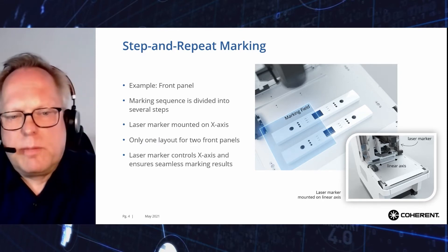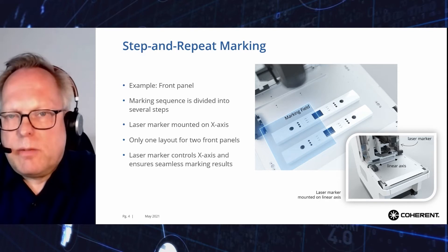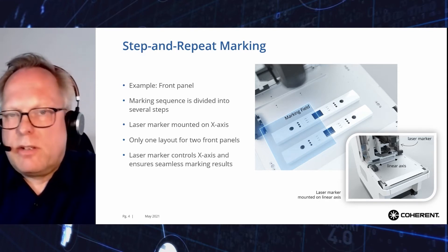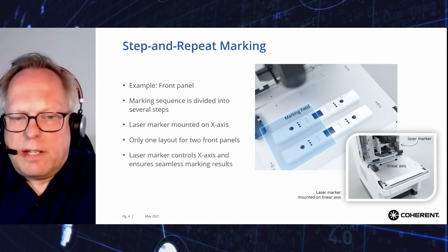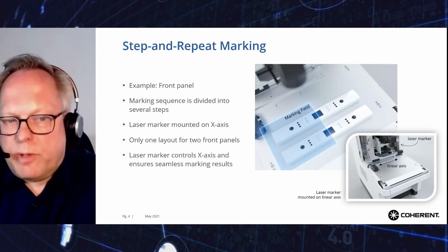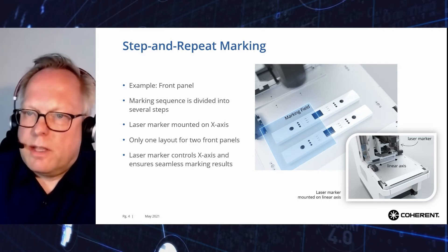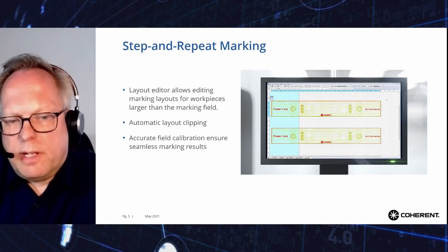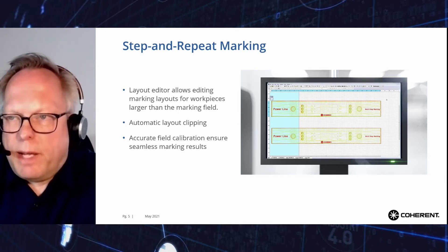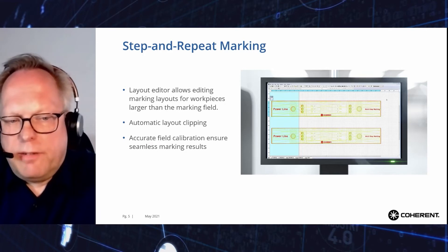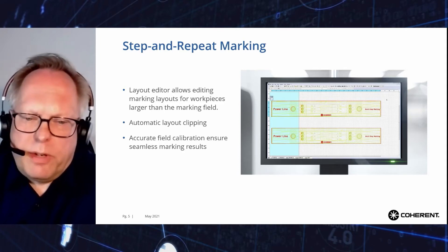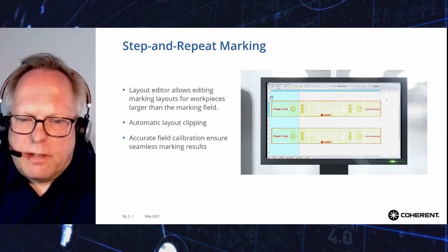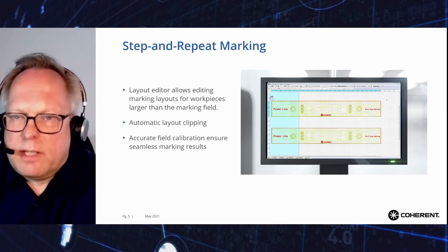The marking system is equipped with a linear axis that can move the laser marker from left to right and right to left. This axis is controlled by the laser marker software. This is a close-up view of the marking layout editor. The layout of both panels is imported as a CAD file, and the three red elements show the marking content. The white area indicates the current marking shadow, and the software automatically clips the layout at the correct locations.